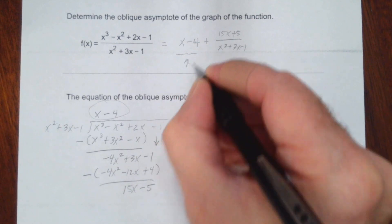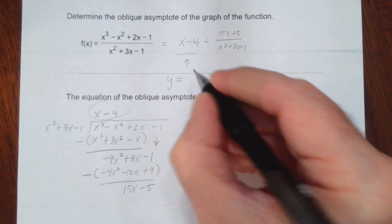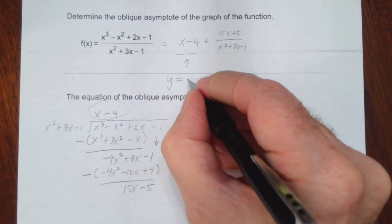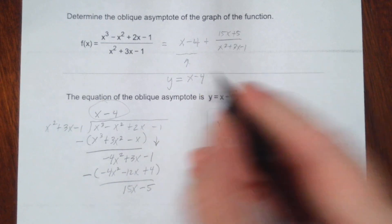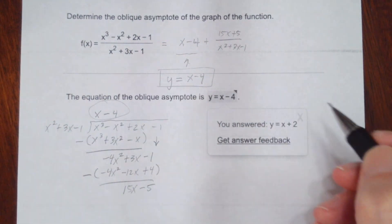Now, what we've learned is that our asymptote will be equal to what's here, y equals x minus 4. So that is our answer.